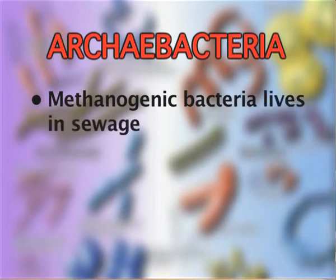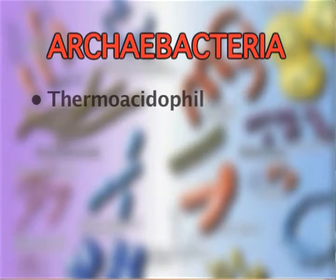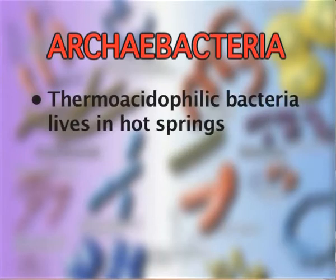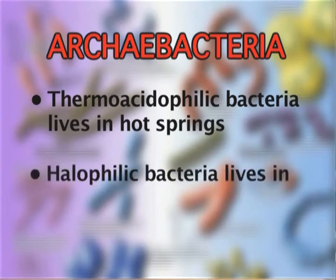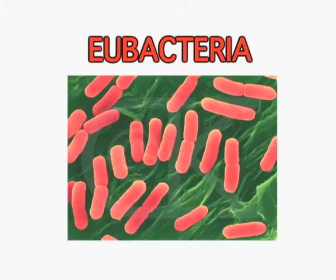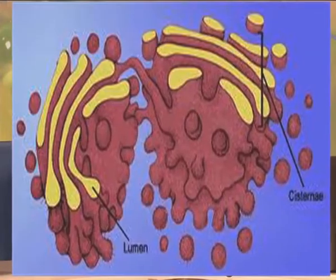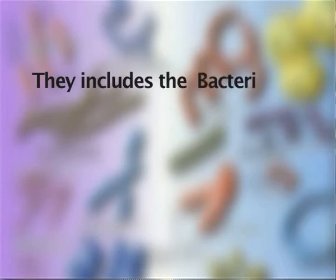Thermoacidophilic bacteria live in hot springs. On the contrary, halophilic bacteria live in salty lakes and rivers. Eubacteria include all the microscopic organisms — they are prokaryotes, meaning cell organelles such as mitochondria, Golgi apparatus, and endoplasmic reticulum are absent in them, and they do not have a well-defined nucleus. They include bacteria and blue-green algae. The blue-green algae are now known as cyanobacteria. They are all unicellular organisms.